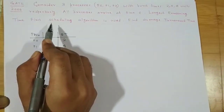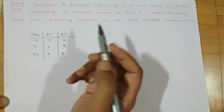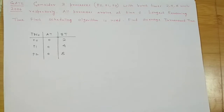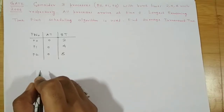LRTF is the preemptive version of Longest Job First (LJF). In LRTF, the process having the longest remaining burst time is given the CPU first. If two processes have the same remaining burst time, the arrival time acts as a tiebreaker. If the arrival times are also the same, the process number resolves the tie.